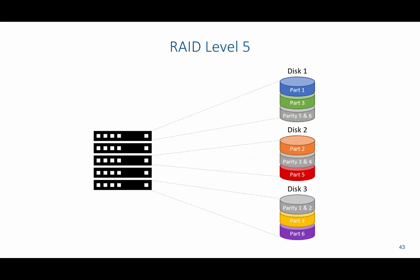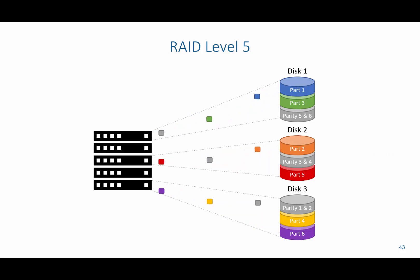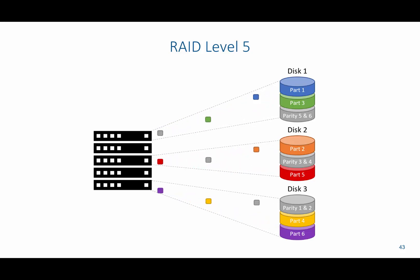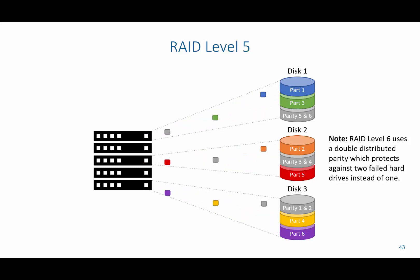RAID level 5 introduces the concept of the parity bit. It performs an XOR summation that combines bits across multiple disks to create a parity bit. By adding parts 1 and 2 you get parity 1 and 2; by adding parts 3 and 4 you get parity 3 and 4; and by adding parts 5 and 6 you get parity 5 and 6. If disk 3 were to fail, you could still reconstruct the missing data by combining disks 1 and 2 using those parity bits. There is also RAID level 6, which introduces a fourth disk so that if two disks fail, you wouldn't lose all your data — because in RAID level 5, two disk failures would result in total data loss.